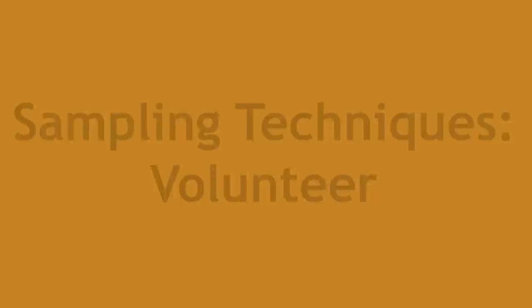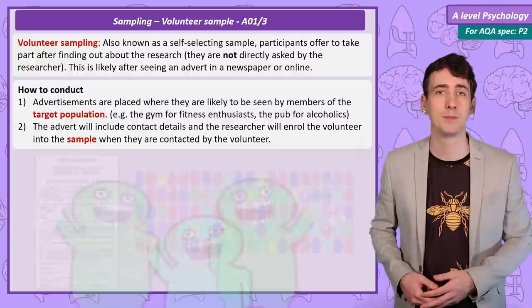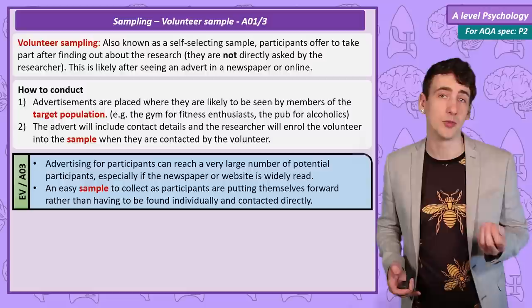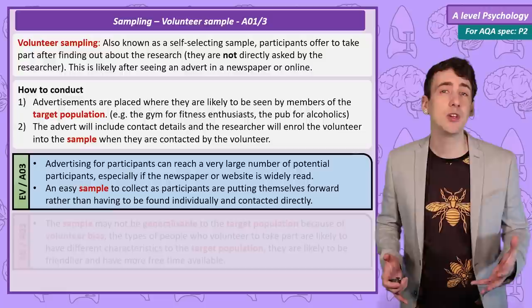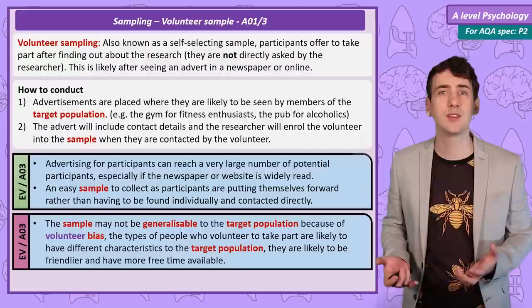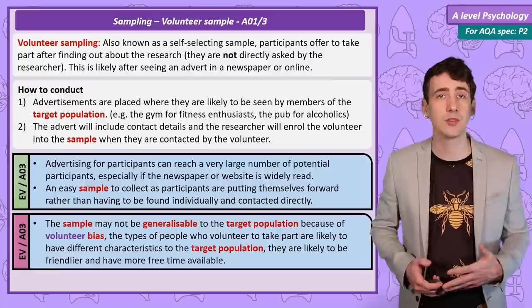Another word for volunteer sample is self-selecting sample, which makes clear the important factor: the participants select themselves — they volunteer. They're not directly asked; they might see an advert in a newspaper or online and put themselves forward. A strength is that by using an advertisement, especially in a popular newspaper or social network, the researcher can reach a large number of potential participants, and it's relatively easy to collect once the ad is placed. But we do have the issue of volunteer bias. People who volunteer for studies tend to be helpful and have time — but we want to include people who are unhelpful and busy. If we don't, we may not be able to generalise our findings to the wider population.